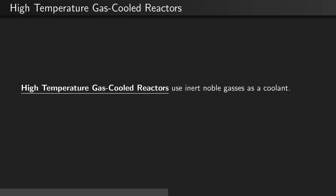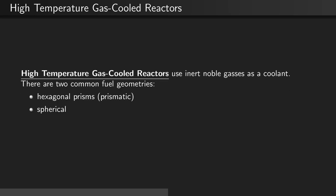High temperature gas-cooled reactors use inert noble gases as a coolant. There are two common fuel geometries: hexagonal prisms or prismatic reactors and spherical.